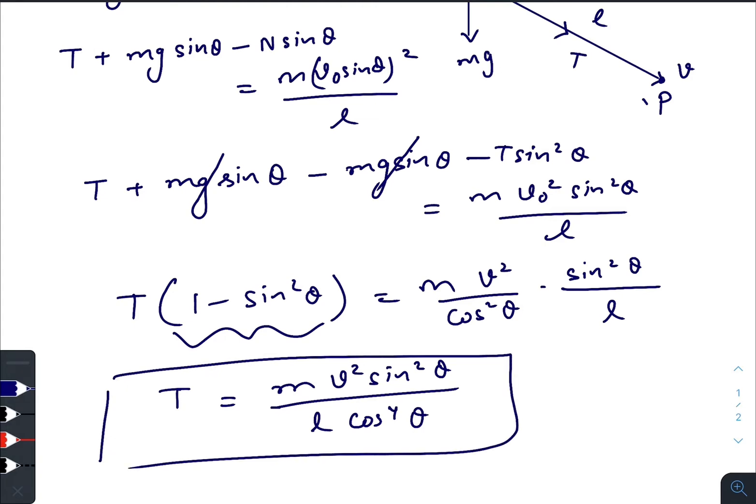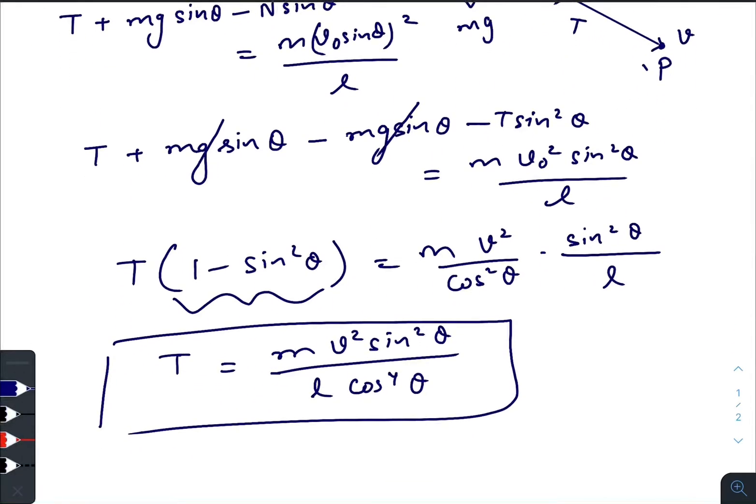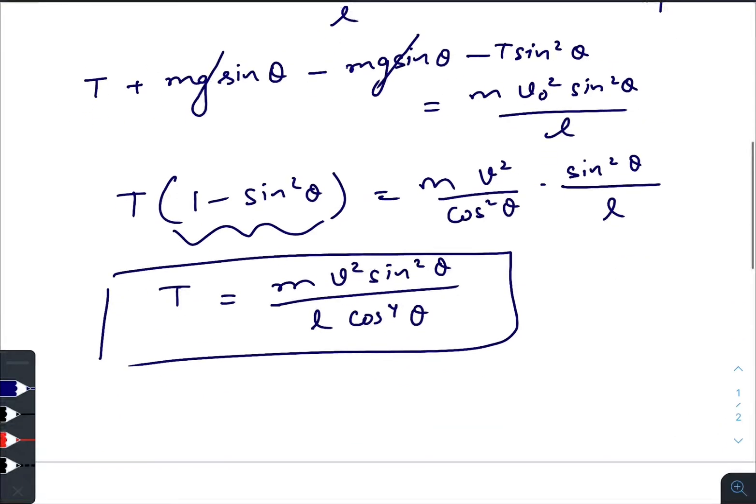Okay, so this is our final result. It will be the tension on the rope at any instant when it makes an angle theta with the horizontal. Thank you.